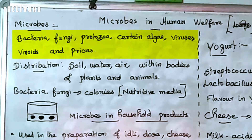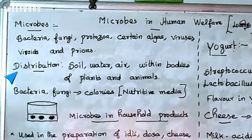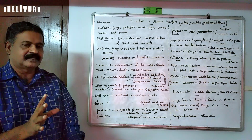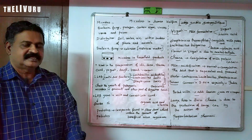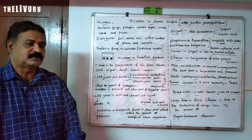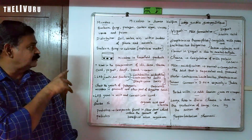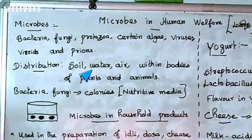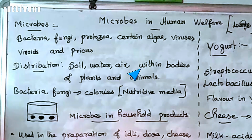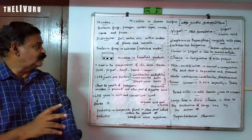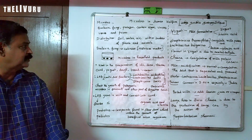So these are the examples of microbes. Then distribution — where are microbes found? They are found everywhere in the world: soil, water, air, and within the bodies of human beings, animals, and plants.